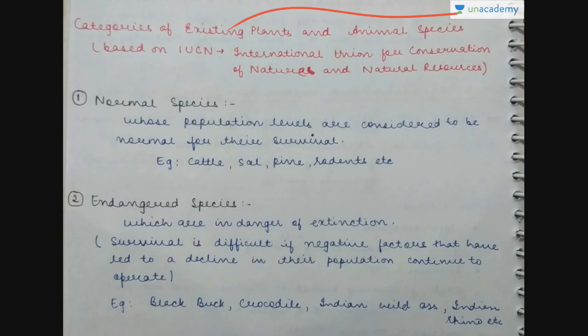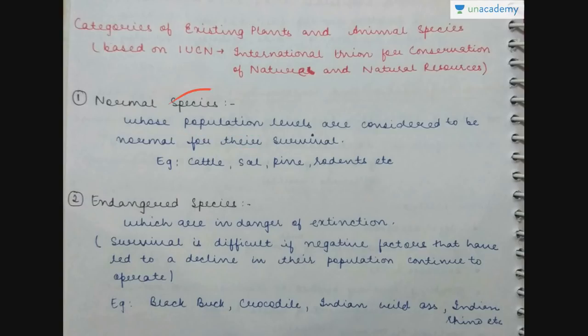Based on IUCN — International Union for Conservation of Nature and Natural Resources — there is some categorization done for existing plants and animal species. The first category is normal species: those whose population levels are considered normal for their survival — they are normally available in number and do not face danger of extinction. Examples include cattle, sal, pine, and rodents.